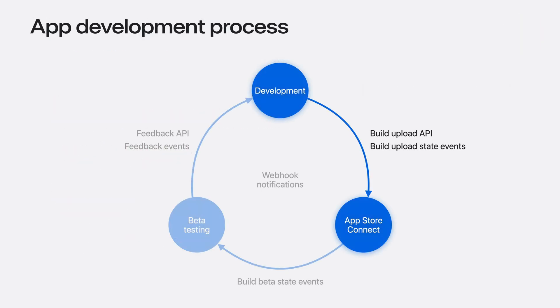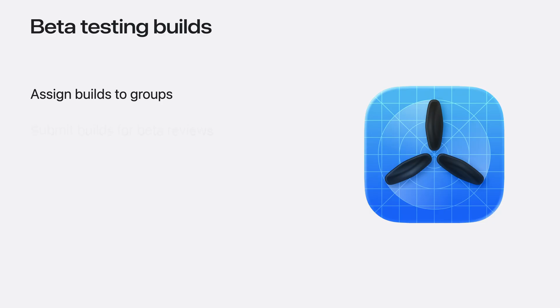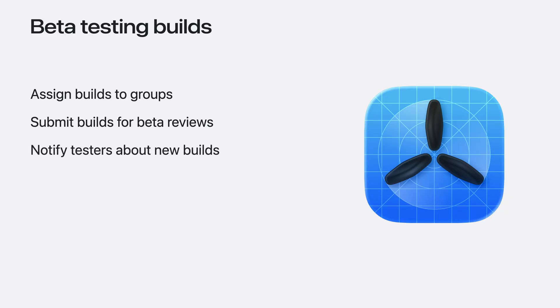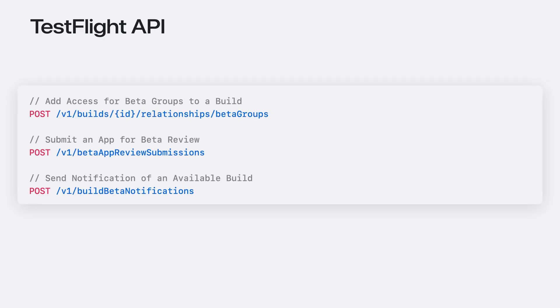That's how you automate the build upload process with the new APIs. Once your build is processed by App Store Connect, you can use TestFlight to distribute your new build to beta testers. You can assign the build directly to specific beta tester groups. For external testers, you will need to submit the build for beta app review first. Finally, you will want to notify testers that the new build is available. All of these steps can be automated using the TestFlight APIs. I want to highlight a useful new addition this year: the Build Beta State Webhook event, designed to notify you immediately when TestFlight beta review is complete.